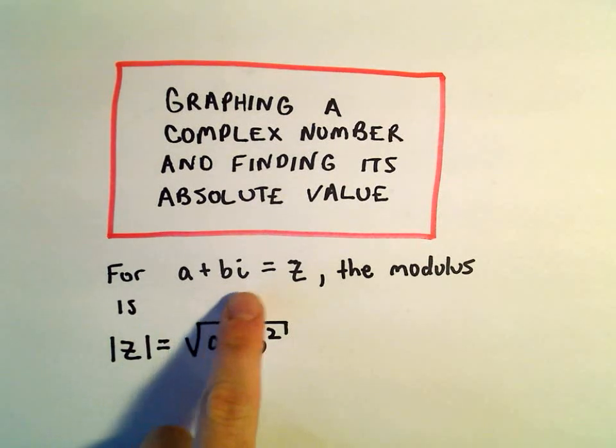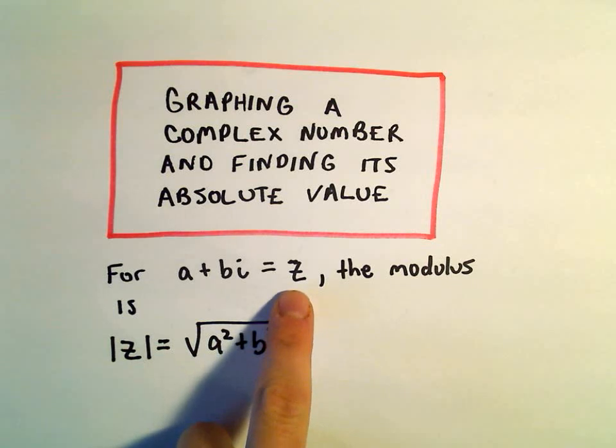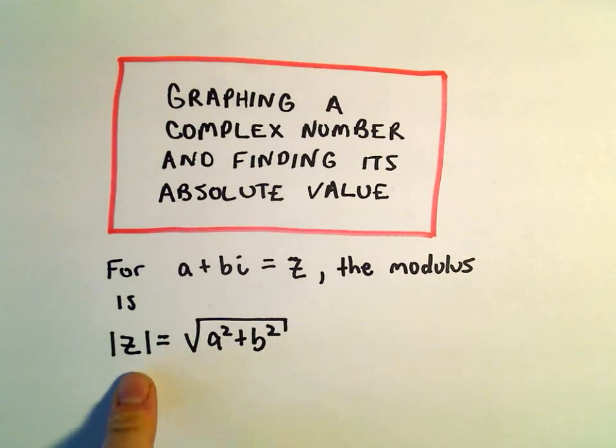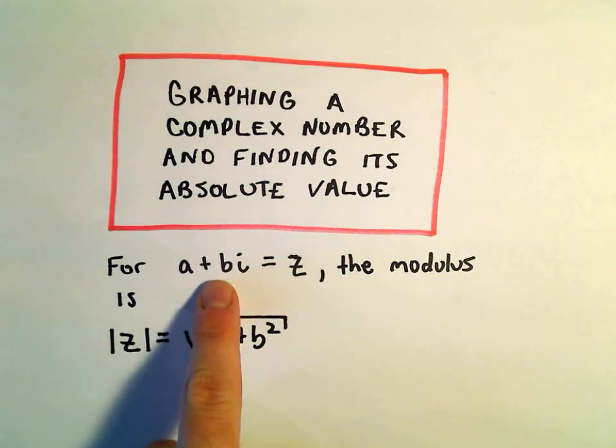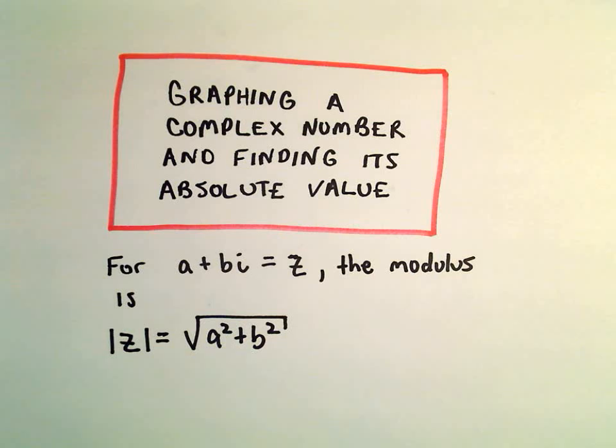For a complex number a plus bi equals z, the modulus, written as the absolute value of z, is found by taking the real part a and squaring it, the imaginary part b and squaring it, adding them together and taking the square root.